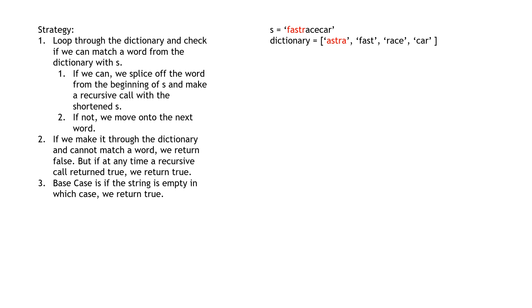If they do match up, then we splice off the prefix and make a recursive call with the new spliced-off word. If we make it through the dictionary without matching a word with a prefix of S, we return false for that recursive call. Also, if all the recursive calls return false, we return false. But if at any time a recursive call returns true, we break out early and return true. Our base case is if an empty string comes in — this means we have spliced off perfectly, and we return true.